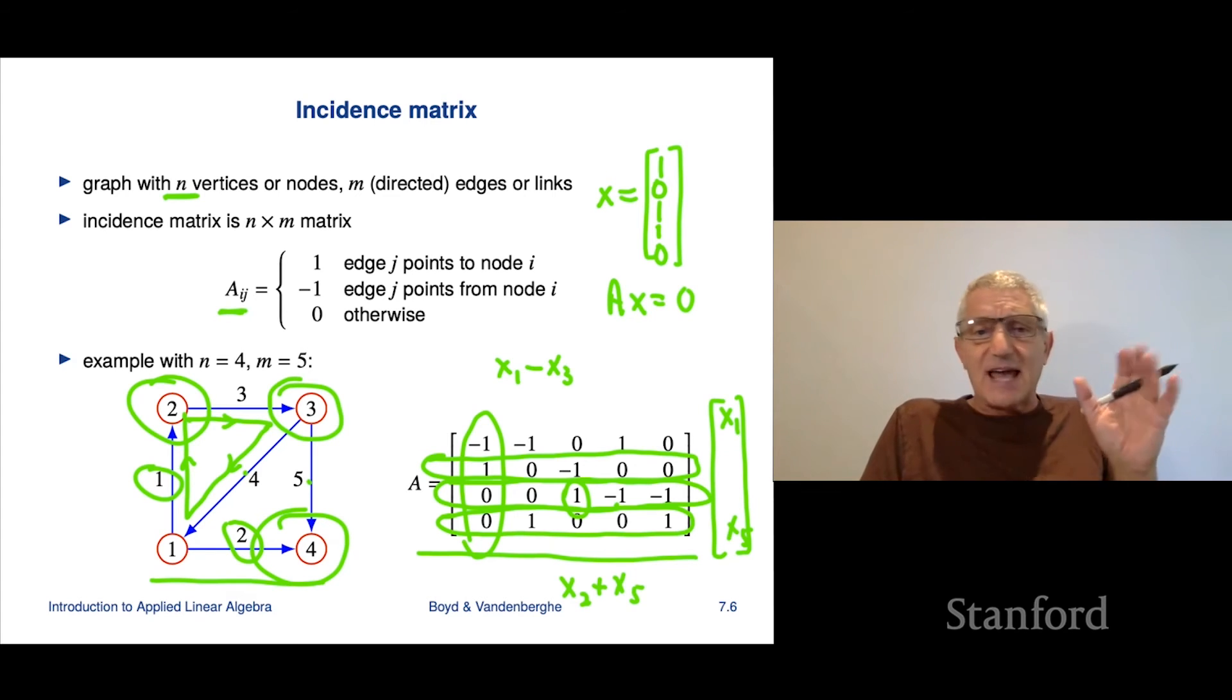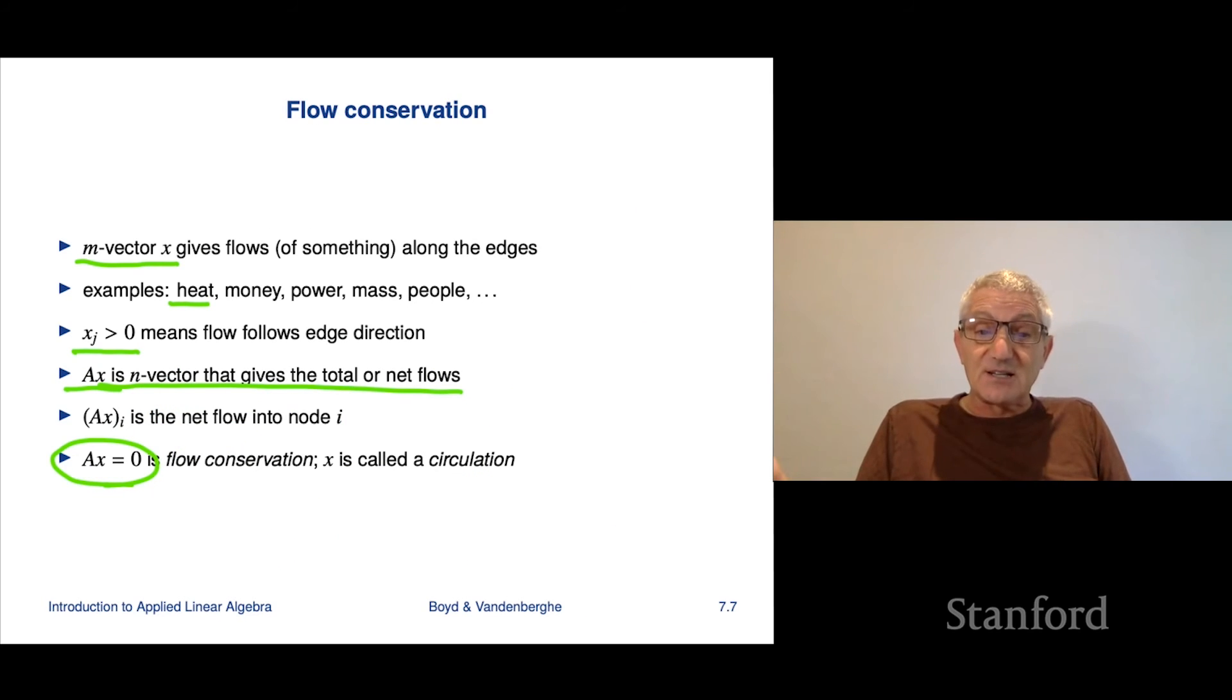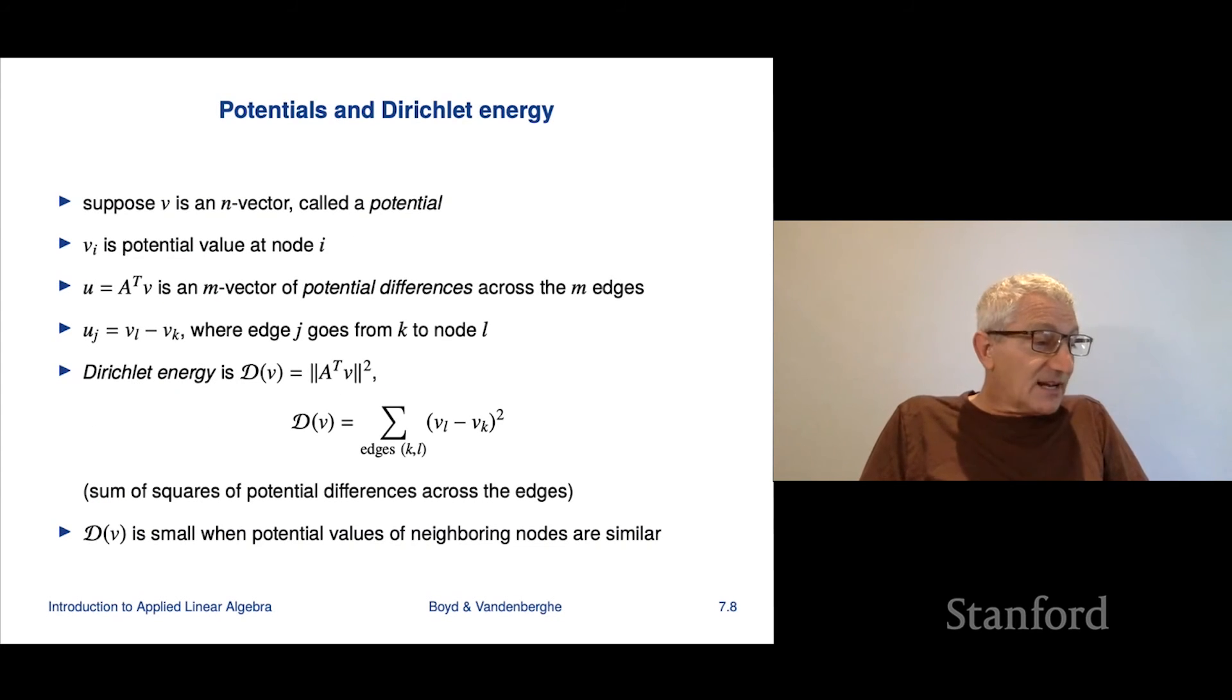Now with graphs, there's something that involves the transpose of the incidence matrix, and it's actually very interesting. We'd focused before - x was a vector that gave you flows on the edges, that was an m-vector. Now we're gonna look at an n-vector, and we're gonna call it v. And we're gonna call it a potential, because that's what it's called in many fields. Mostly comes from physics, mechanics, these kinds of things, or electrical engineering also. So you have an n-vector. And what an n-vector is, is it tells you - it gives you a number on each of the nodes of your graph. So it says, well, it's 12.6 there, it's minus 11 there, it's 2, that kind of thing. So every node on your graph has a number, and we think of it as a potential.